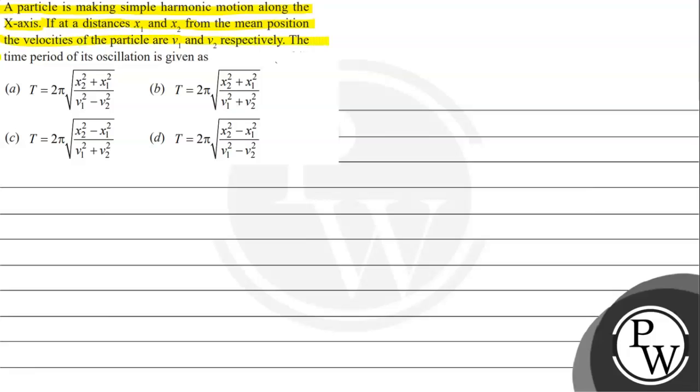Option A: T = 2π√[(x2² + x1²)/(v1² - v2²)]. Option B: T = 2π√[(x2² + x1²)/(v1² + v2²)]. Option C: T = 2π√[(x2² - x1²)/(v1² + v2²)]. Option D: T = 2π√[(x2² - x1²)/(v1² - v2²)]. The key concept we need to understand is equations of a particle performing SHM.